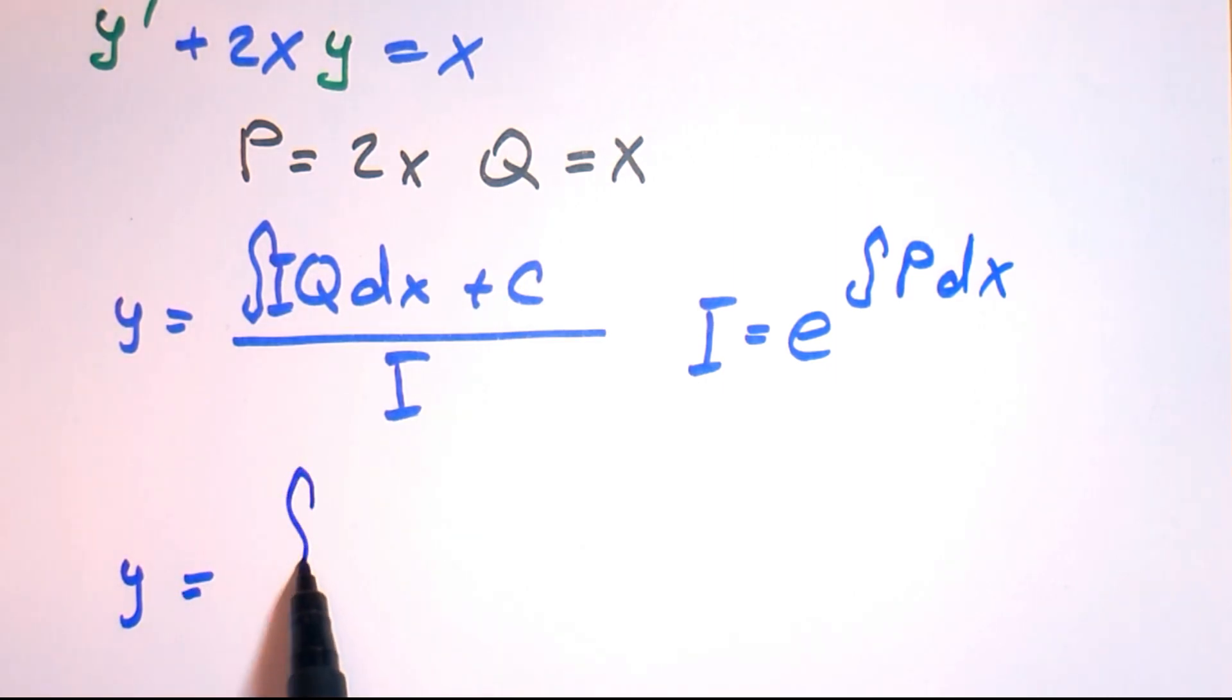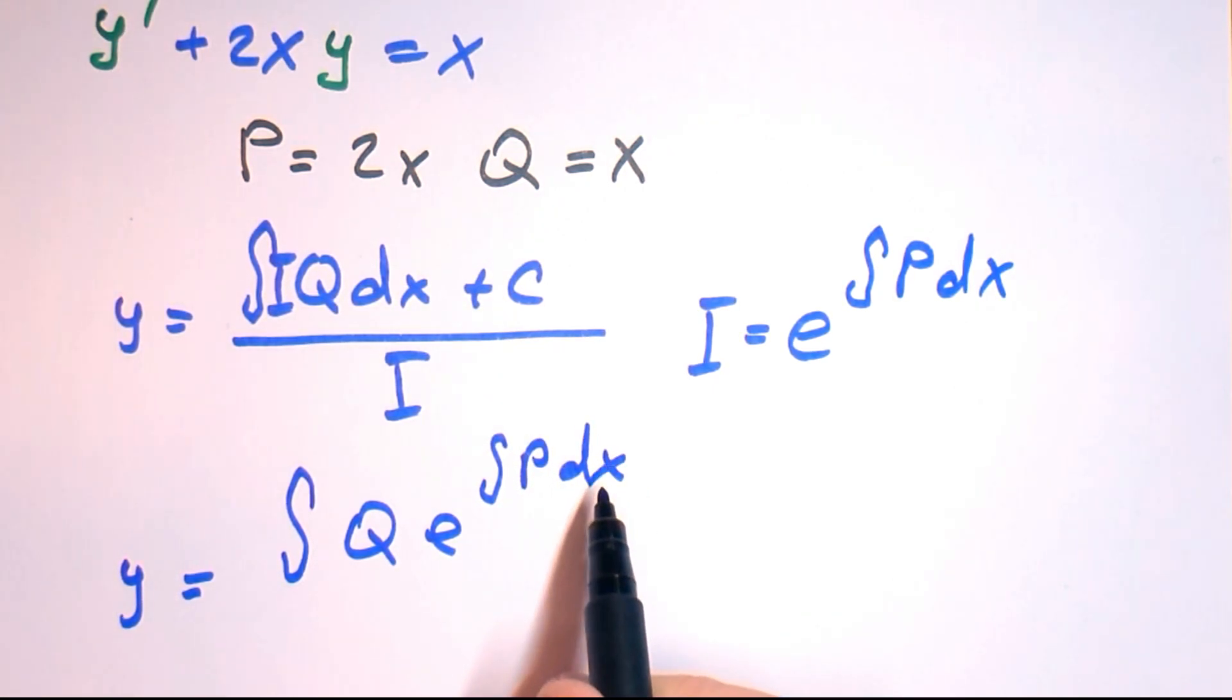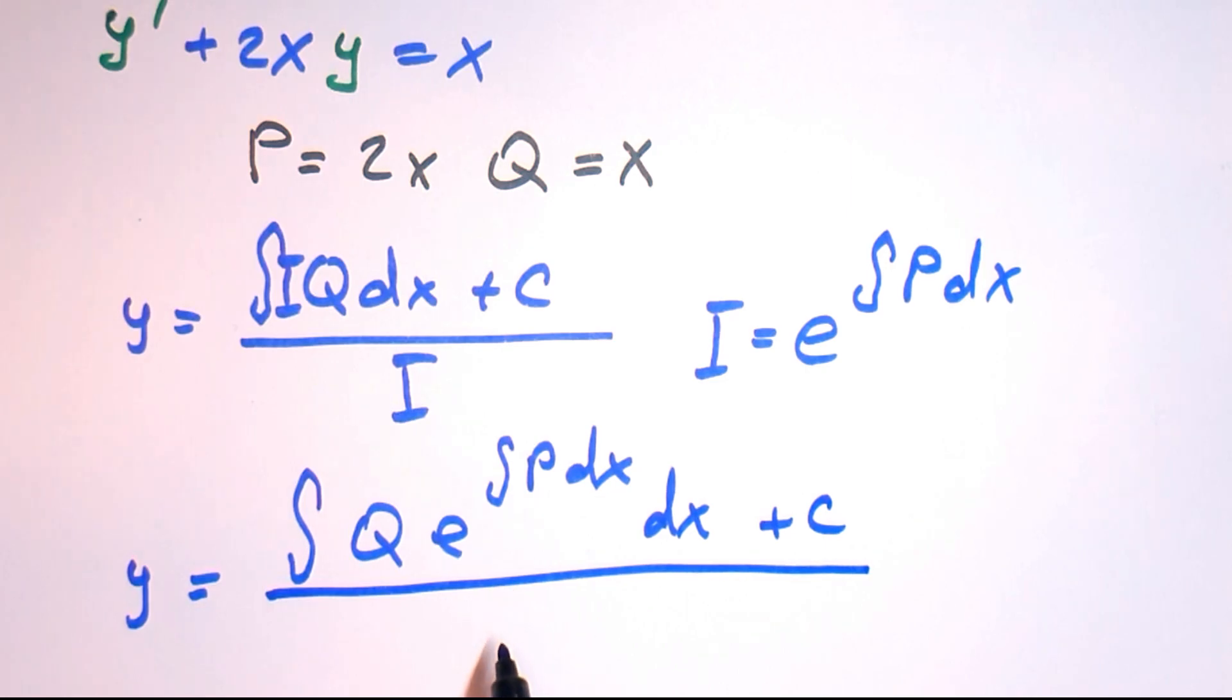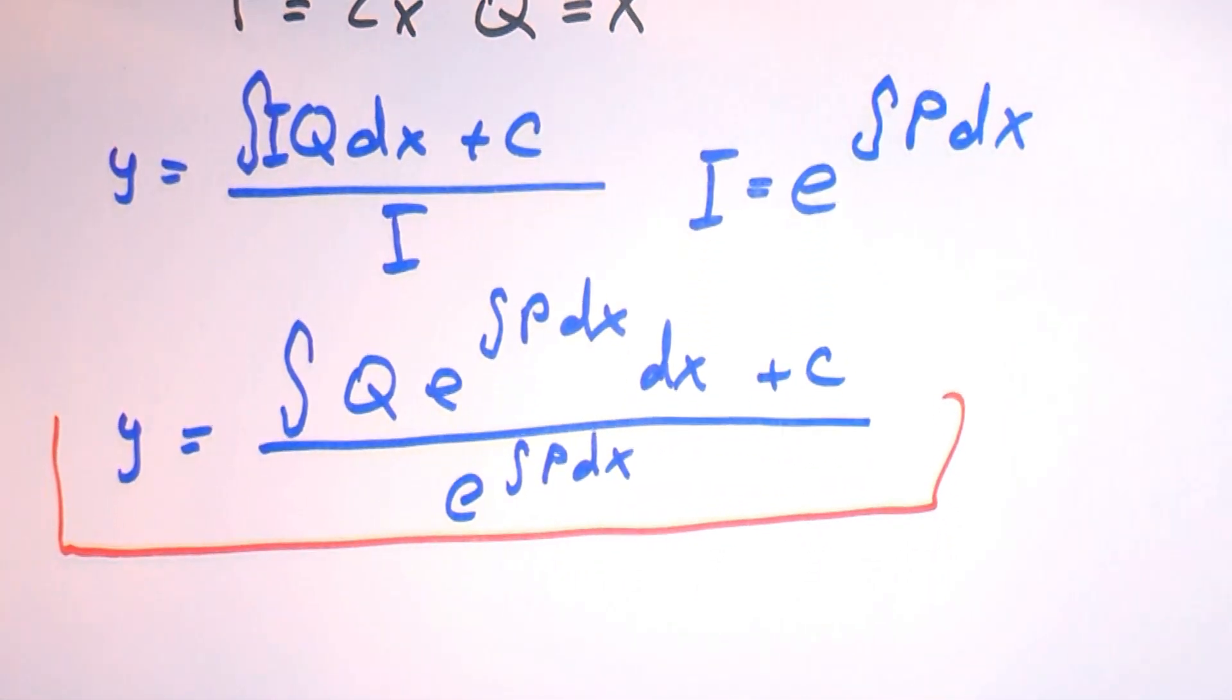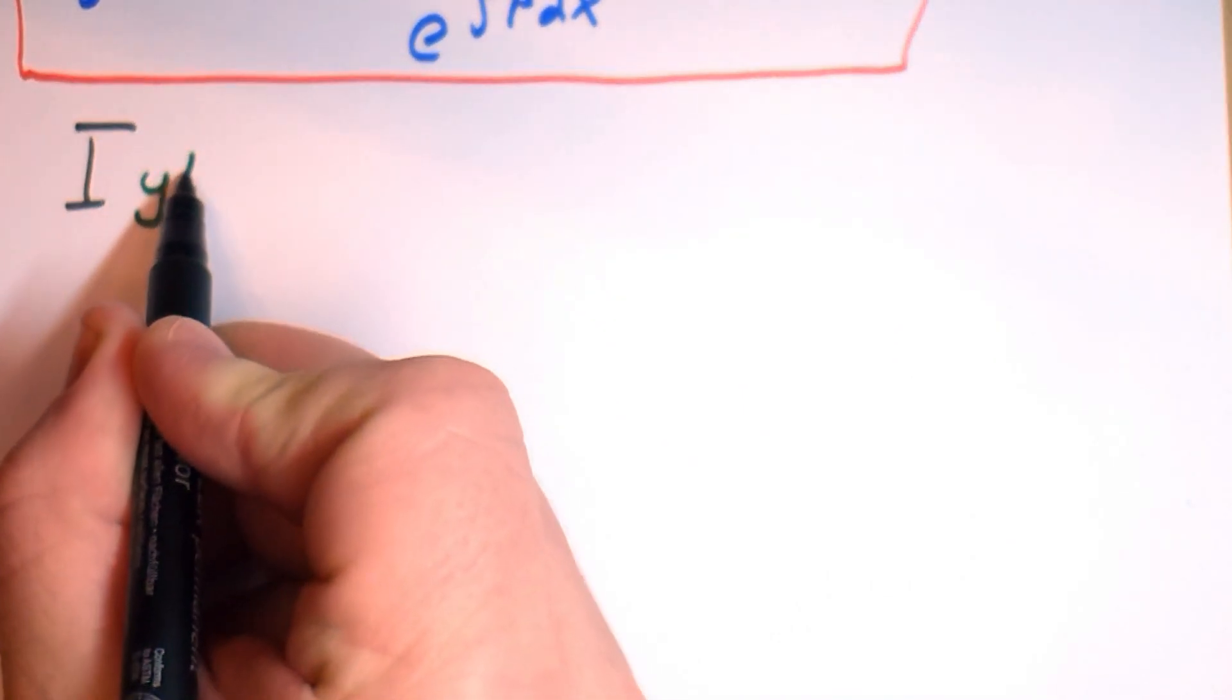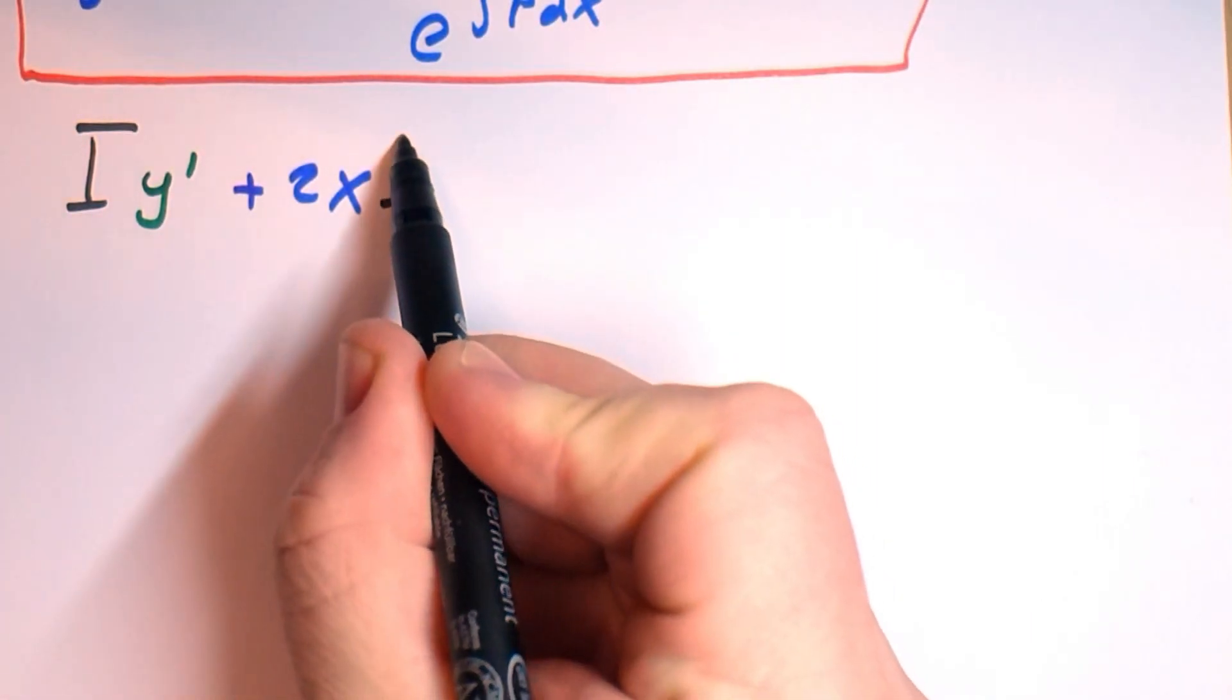Or in general, y equals integral of q times e to the power integral p dx, everything over dx plus c, divided by e to the power integral p dx. But never use this equation because it's very difficult to remember and very easy to make a mistake in definition of p and q. I always advise you to solve it from scratch at the beginning.